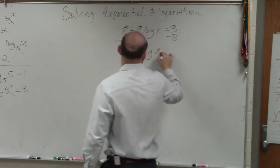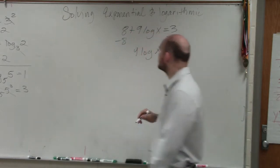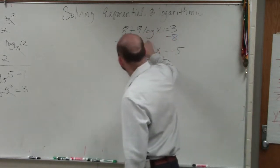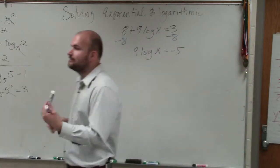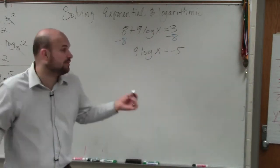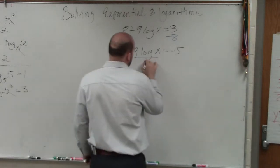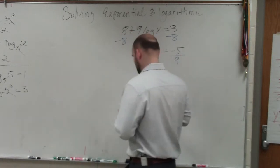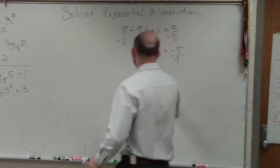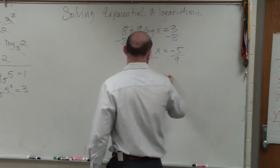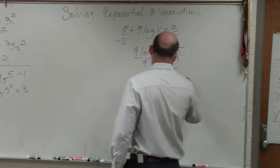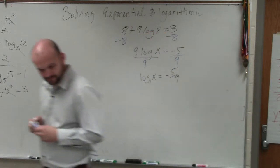Now, you can see that a 9 is being multiplied by my logarithm. So to undo multiply by 9, I'm going to divide by 9. So I have log of x is equal to negative 5 ninths.